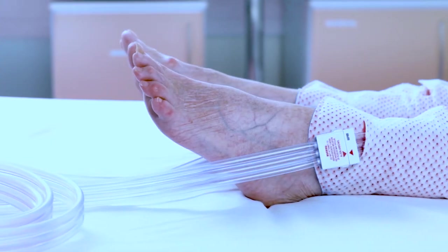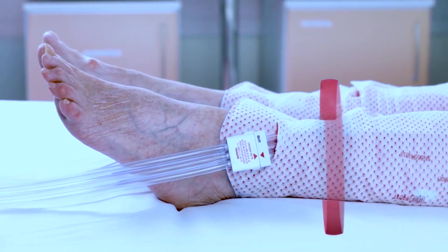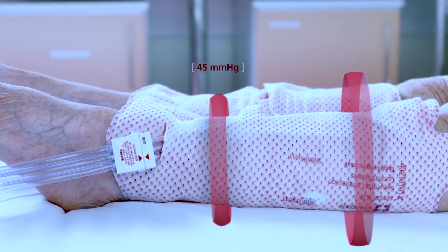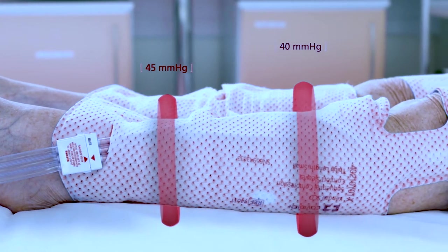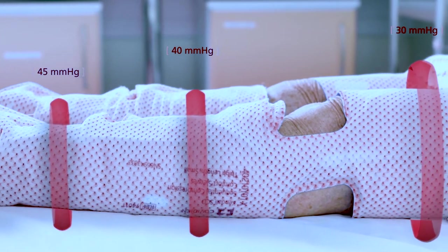The sleeve has three separate bladders, which inflate sequentially, beginning at the ankle with a pressure of 45 mm of mercury, moving up to the calf at 40 mm of mercury, and ending at the thigh with 30 mm of mercury pressure.